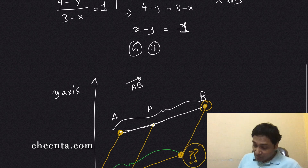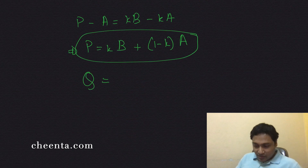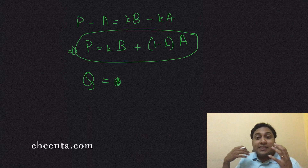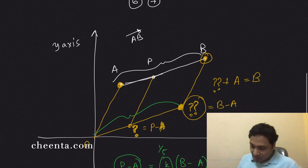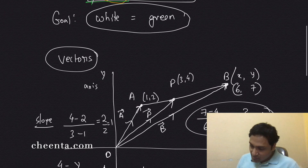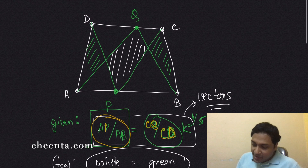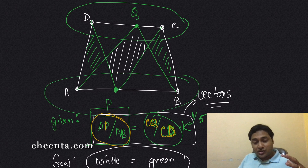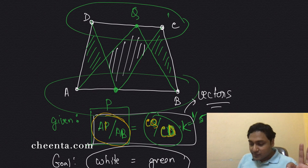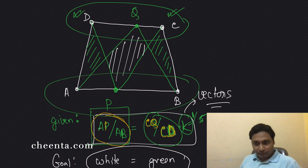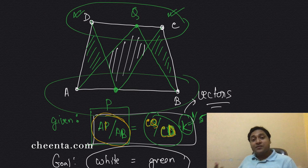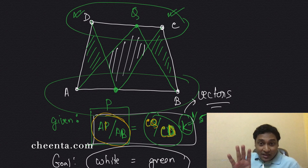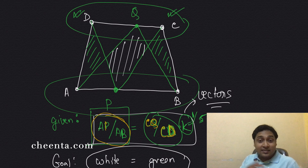Your task: find Q in terms of C, D, and the constant k — similar to how we found P. Use the condition CQ/CD = k, bring segment CD to the origin, and express Q as something times C plus something times D. Put your answer in the comments. In the next video, we'll show how to prove the green area equals the white area using vectors and the carpet strategy for quadrilaterals.